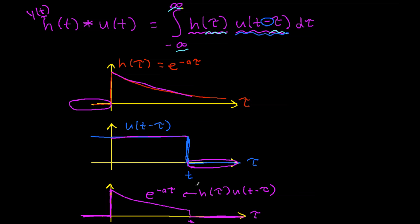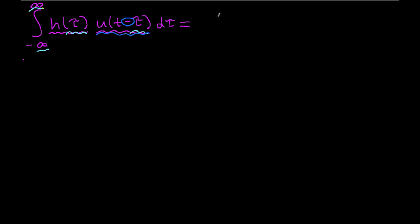To compute the integral, I need to find the area under this product. I can do this by working out the integral directly. So let's write out what this integral should be: it's the integral from 0 to t of e to the minus a tau d tau.